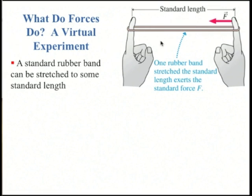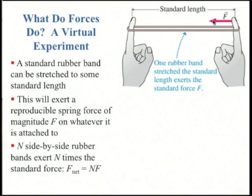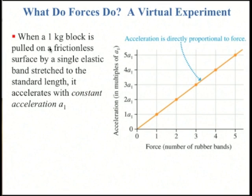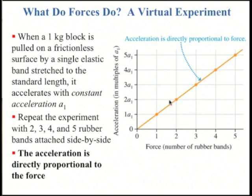If we have one rubber band stretched by some standard length, it gives some standard force. If we place n rubber bands side-by-side, the net force on each finger increases by a factor of n — two rubber bands exert twice the force. For a one kilogram block pulled on a frictionless surface by a single elastic band, we measure acceleration A1. Two rubber bands give double the acceleration, 2A1. Three, four, or five rubber bands produce a graph showing that acceleration is directly proportional to force — five times the force gives five times the acceleration.